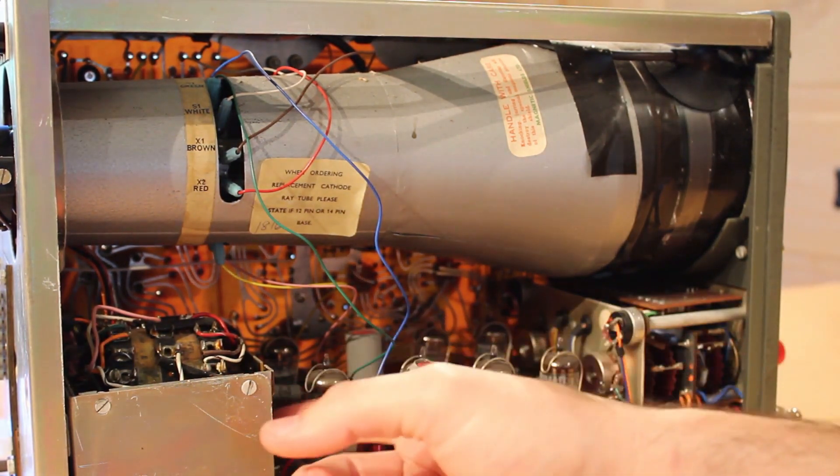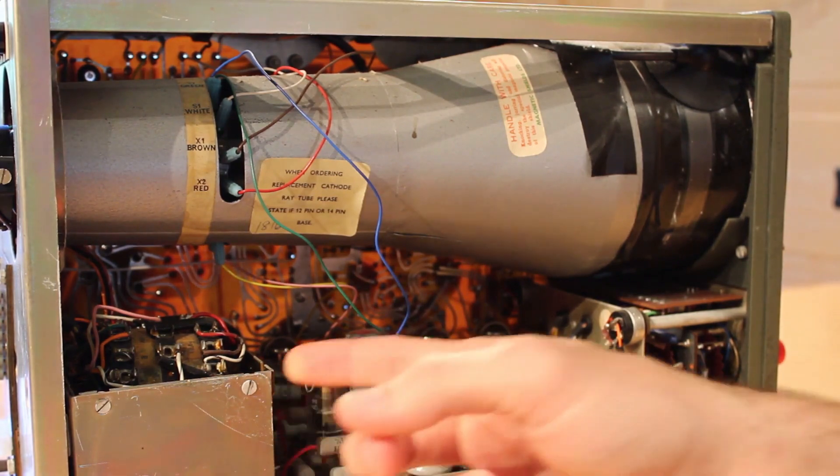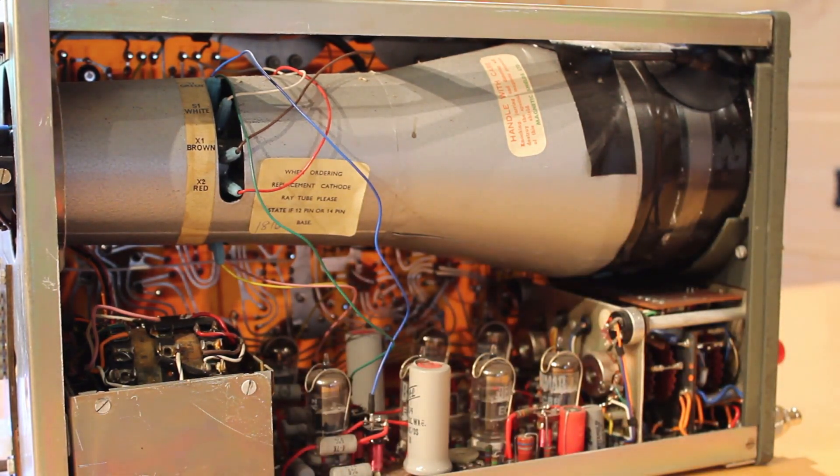And then behind our PC board, we can see the huge transformer here that supplies all the different volts that are used throughout this. And of course, we have our giant CRT up here. Let's flip it around and take a look at the other side.